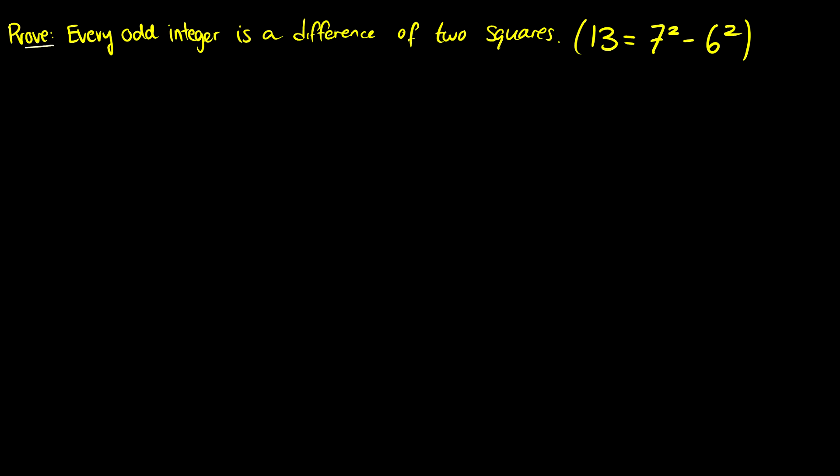Okay, so here's the second one. Prove that every odd integer is a difference of two squares. Here we don't have any assumptions, we're just given a statement and we have to prove it. So every odd integer is a difference of two squares. For an example, 13 equals 7 squared minus 6 squared.